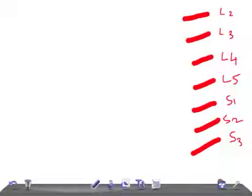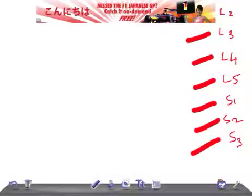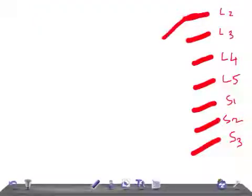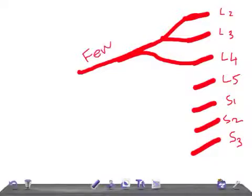Let's move on to the nerves and how they join to form the different nerves of the lower limb. L2 and L3 fibers join together and take some fibers from L4 to form a great nerve of the lower limb — that's the femoral nerve. The femoral nerve is a very important nerve of the lower limb.